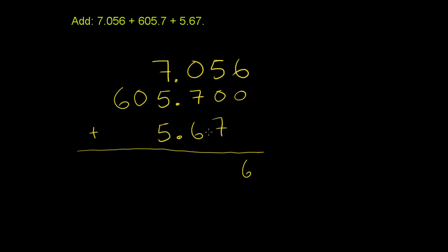You can also do it here. This 5.67, you could write it as 5.670. And when you write it like this, then you have 6 plus 0 plus 0 is 6.